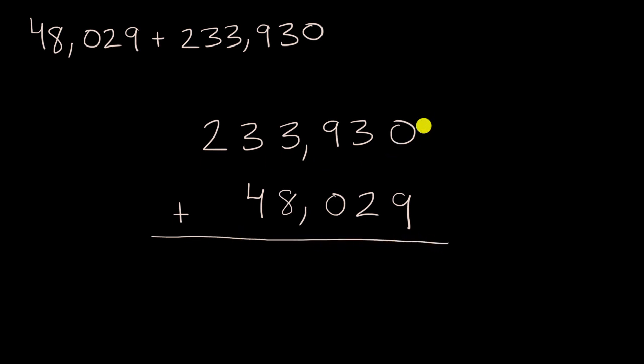So let's start in the ones place. And if I'm adding numbers, it's always a good idea to start in the ones place. Zero ones plus nine ones is nine ones. And then I can go into the tens place. Three tens plus two tens is five tens. This is going well.